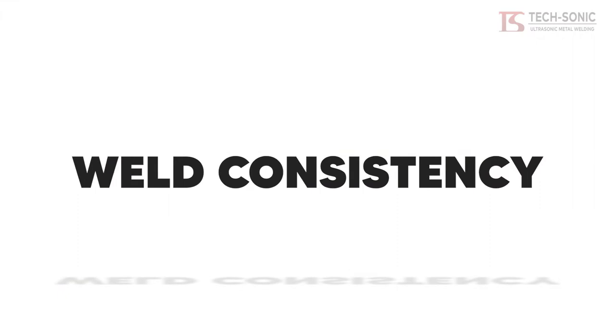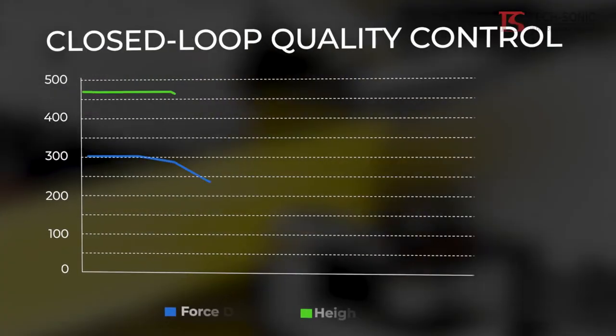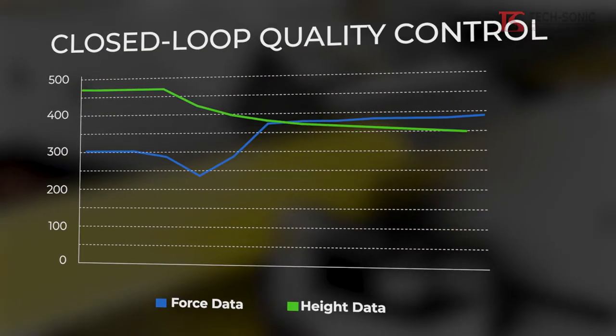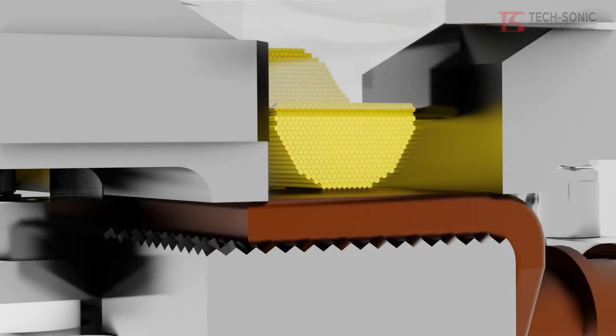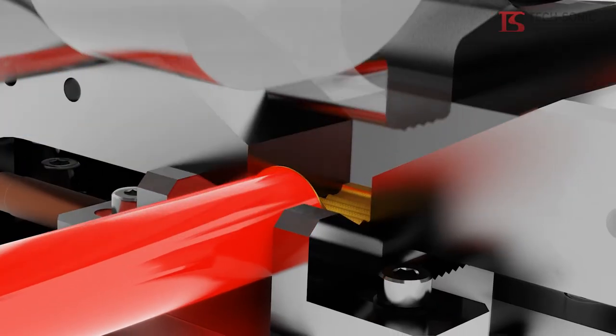Weld consistency. The energy expended remains steady on every weld. An extremely low Sigma value is one of the main factors for process capability.